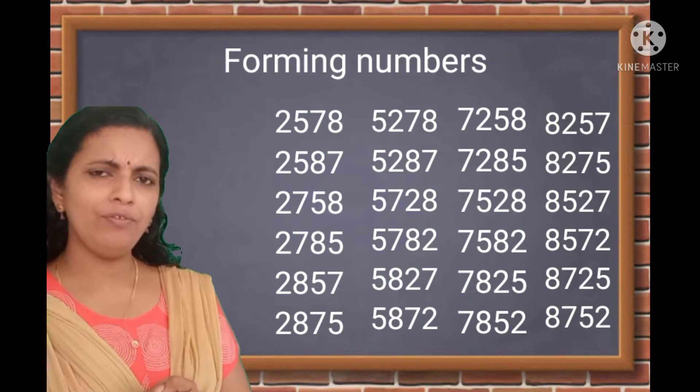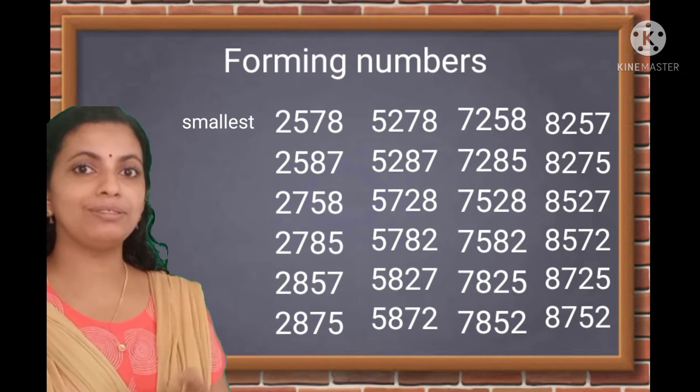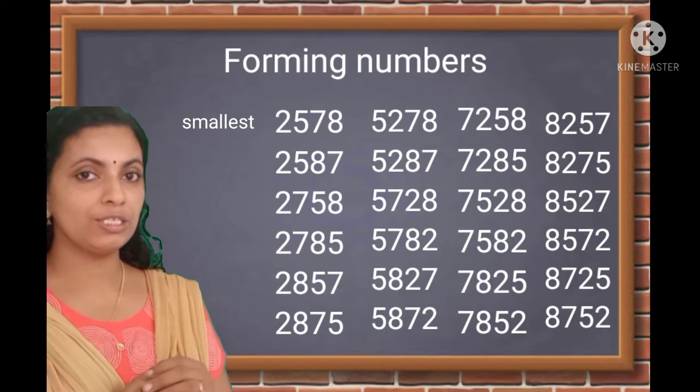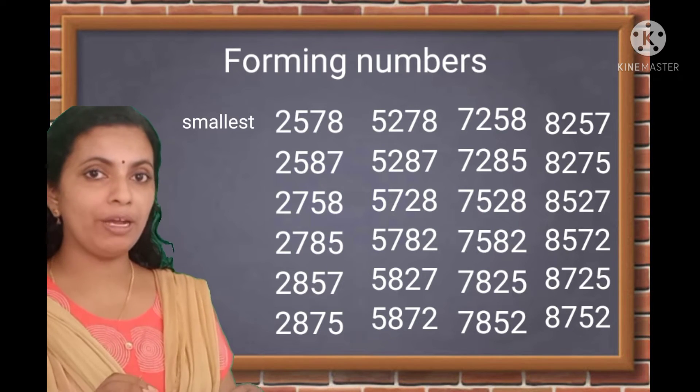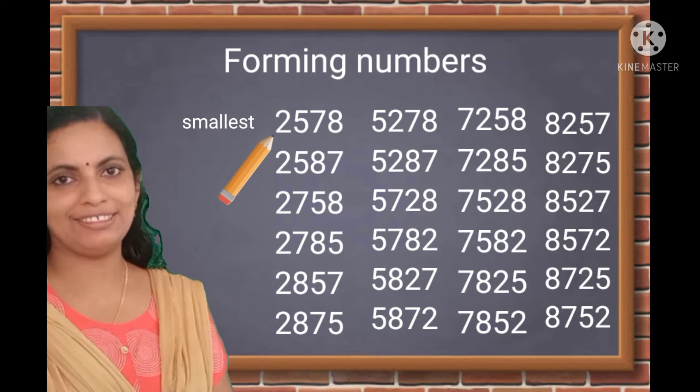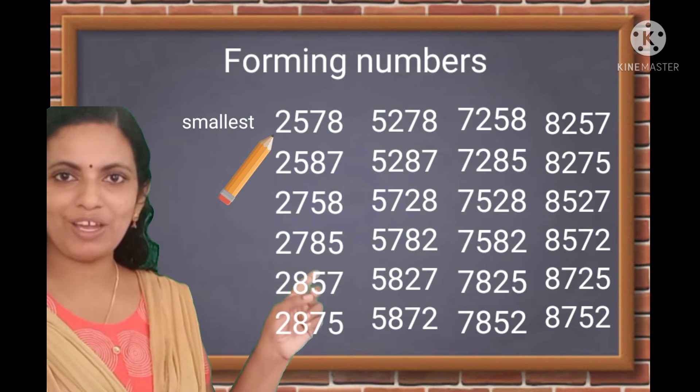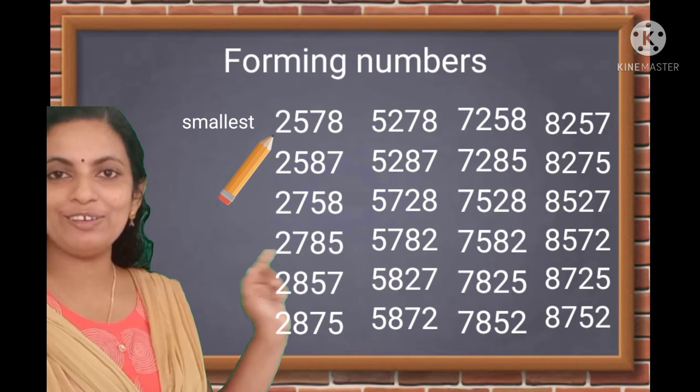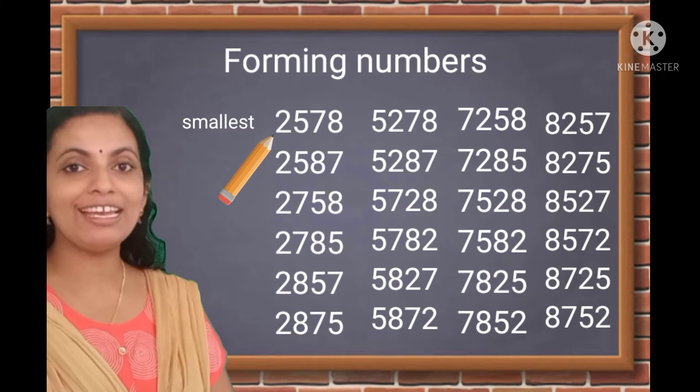Now, tell me, which is the smallest number? The smallest number formed by the given four digits. 2578. Look, the digits are arranged in ascending order.